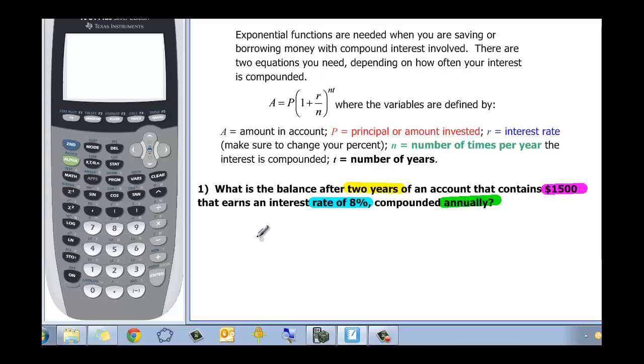So if we rewrite this problem, we have A is equal to that principal of 1,500. In fact, let's just put some color in here. 1,500 times 1 plus my rate, which was .08, and then we're going to divide that by the annually, which is one, and raised to the N times our T, which is two years. And if we wanted to simplify that a little bit, we could say that that's 1,500 times 1 plus .08 to the 2. In fact, we could just call this 1.08.